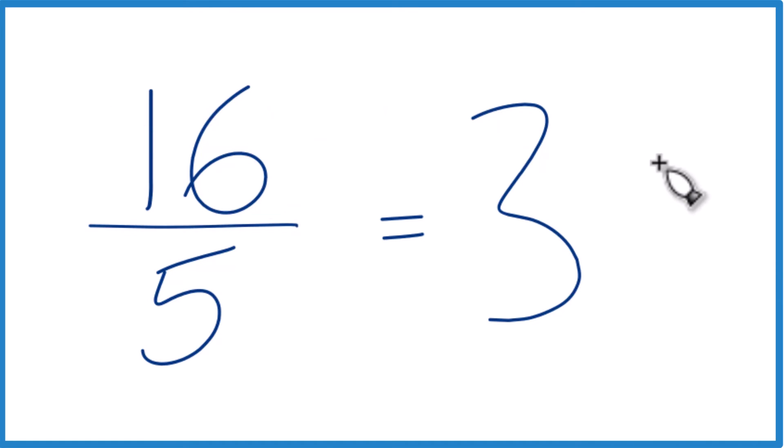And that would mean we have 1 left over. We make that, the remainder, make that our numerator. And we just bring the 5 across. That's the denominator. And we're done.